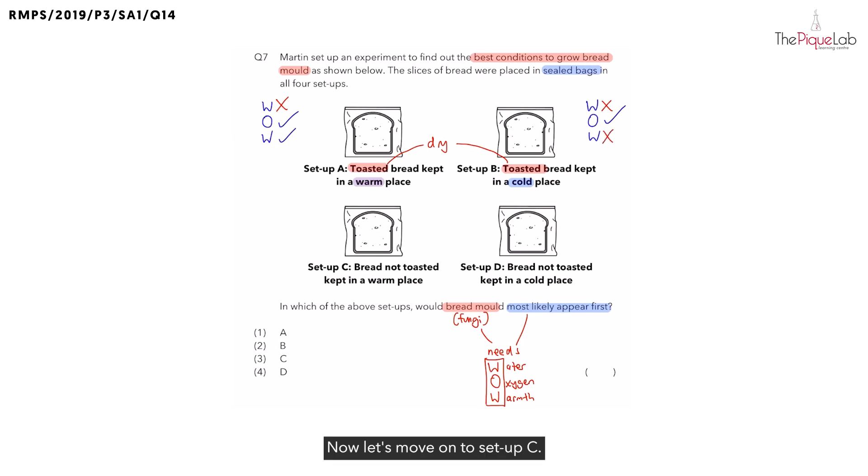Now, let's move on to setup C. Same thing. Let's write the three conditions at the side. Now, does this bread have water? Answer is yes. How can you tell? If you look at the bread used, was the bread toasted? No. Remember, non-toasted bread, is it crunchy? No, right? It is soft. And because it is soft, it means there is water present in the bread. So we can put a tick.